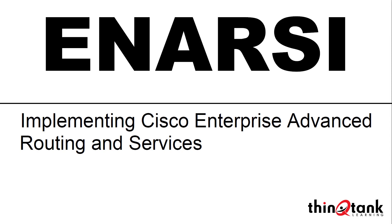More specifically, you're going to learn how to implement and troubleshoot most of the advanced routing technologies, as well as infrastructure security and services. We're going to spend quite a bit of time in the first section talking about implementing EIGRP, optimizing EIGRP, and troubleshooting EIGRP. We're also going to talk about implementing OSPF, optimizing OSPF, troubleshooting OSPF, as well as configuring redistribution, troubleshooting redistribution, and implementing path control.